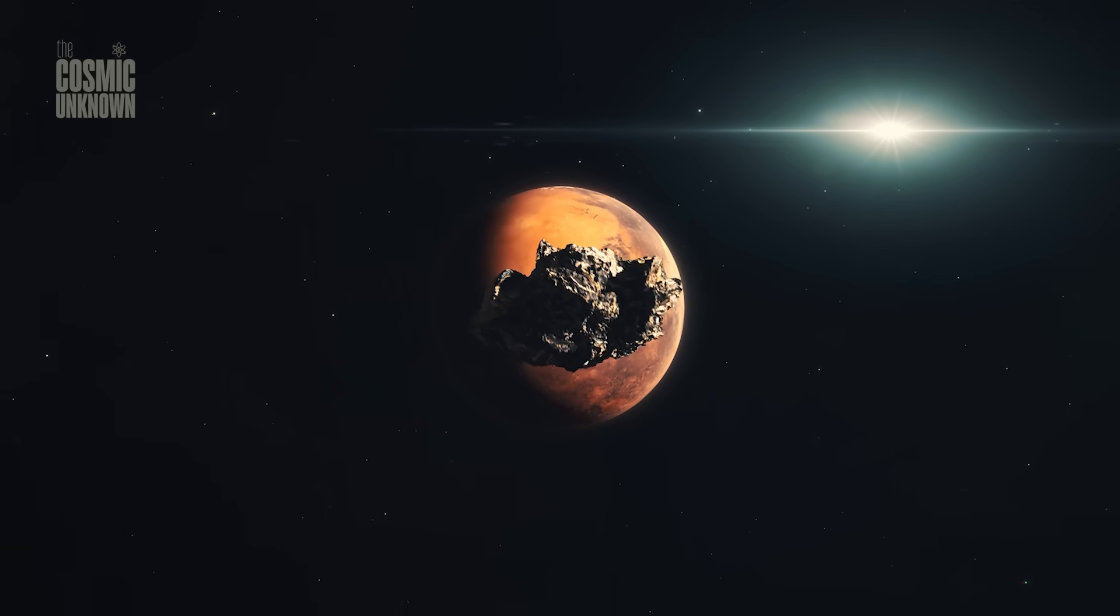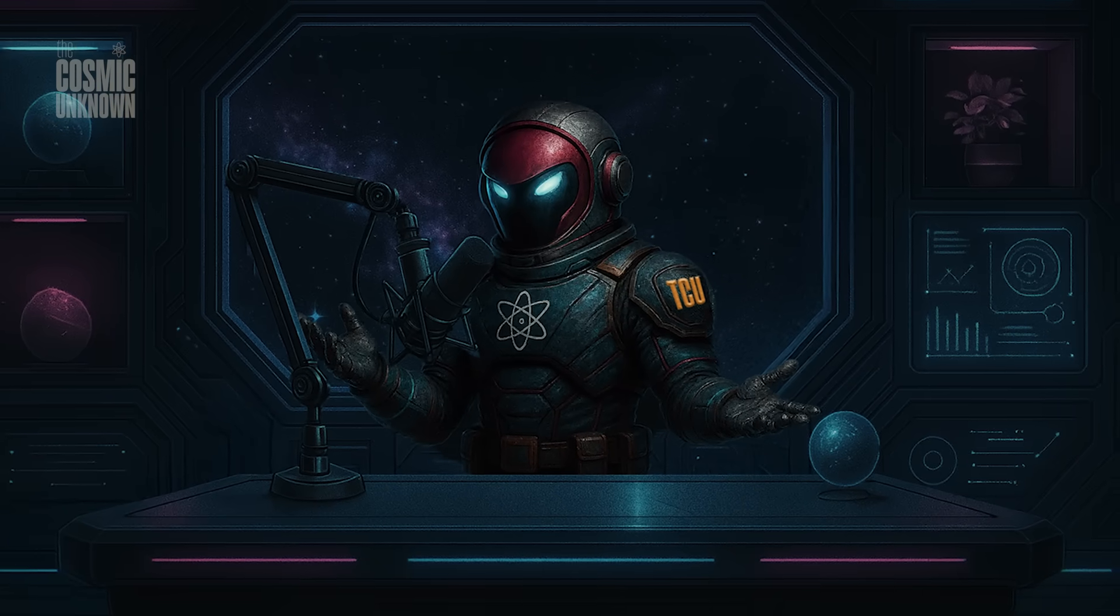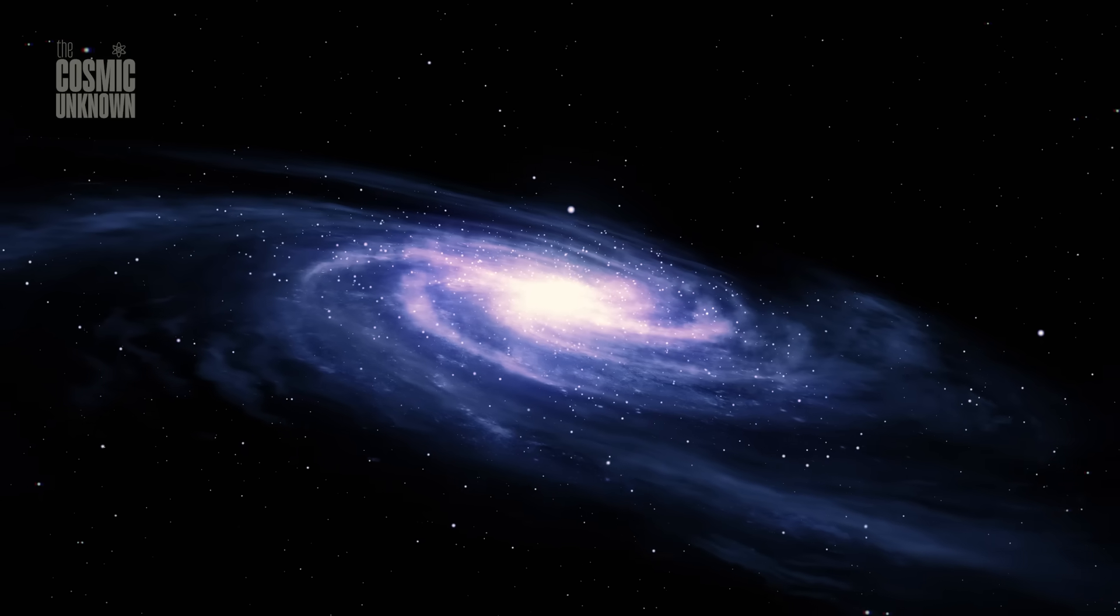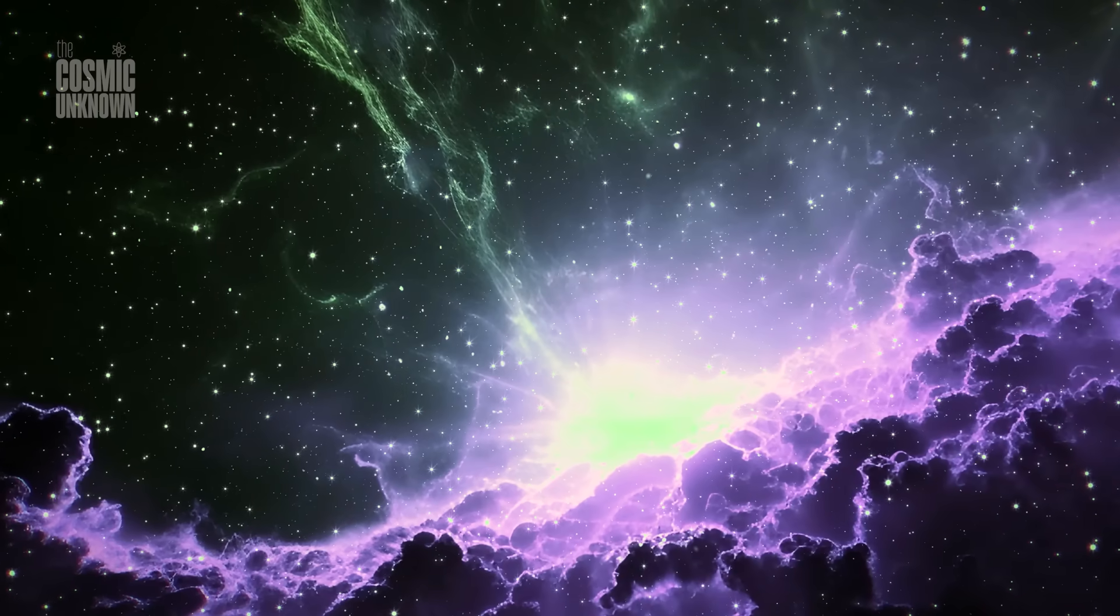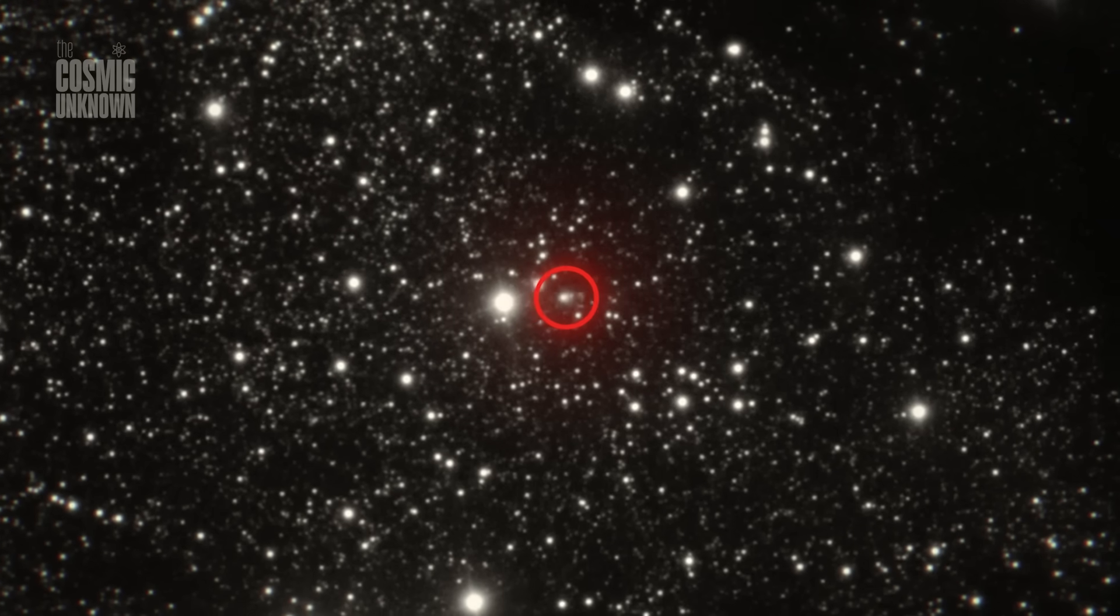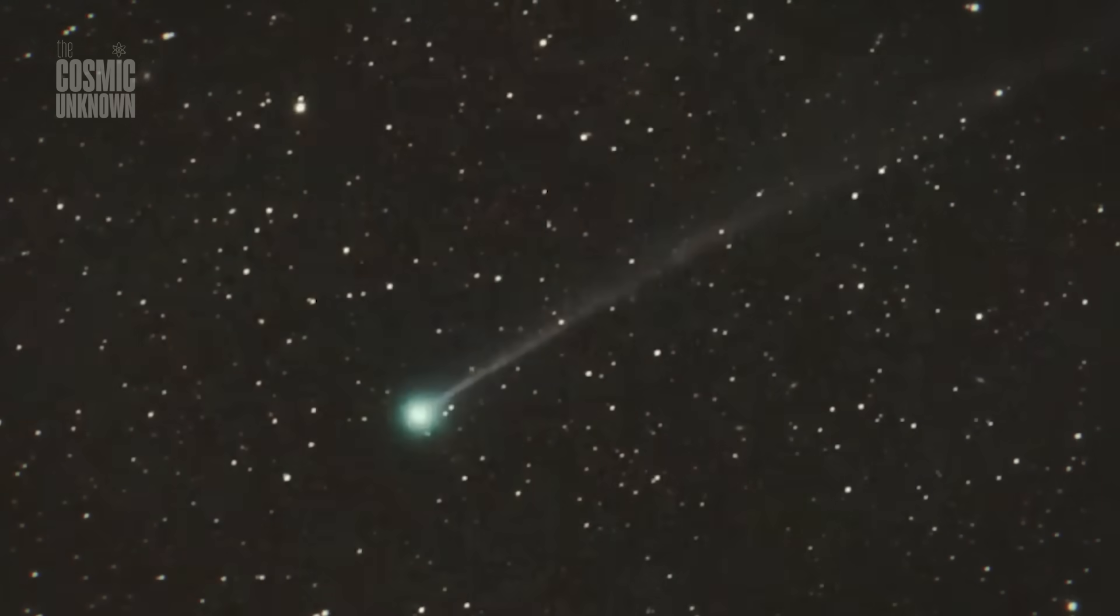Its orbital period isn't exact. Early estimates suggest about 22,000 years. If that's true, the last time R2 SWAN passed through this part of the sky, humans were painting caves. And it won't be back anytime soon. This is it. Our only chance to see it. And so far, much remains unknown.